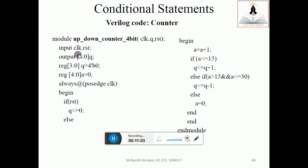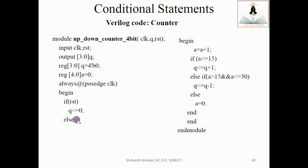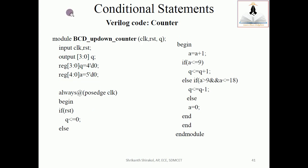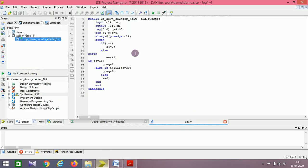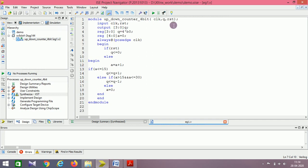Here is the same code we discussed, now taken into the Xilinx environment. Before running simulation I want to reconfirm the non-blocking and blocking rule: if you use non-blocking for Q here, it should be non-blocking everywhere Q is assigned. If you use blocking, it should be blocking everywhere. Mixing will throw an error. For the BCD up-down counter the only changes are: replace 15 with 9, and replace 30 with 18.